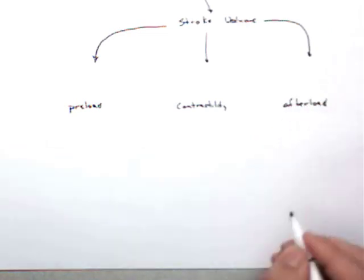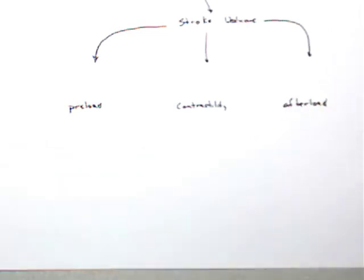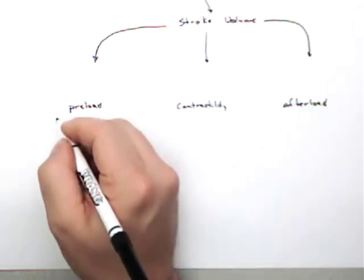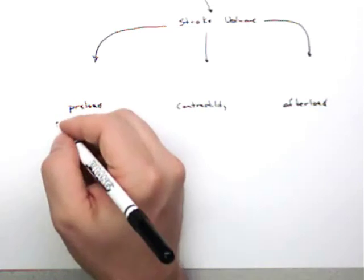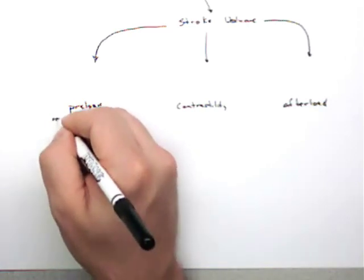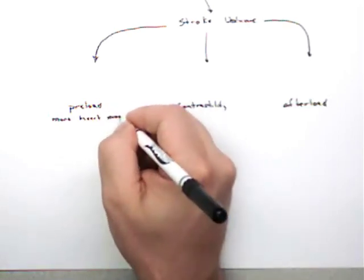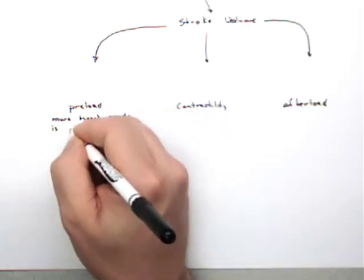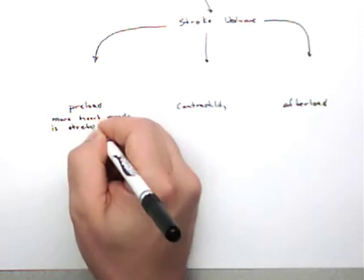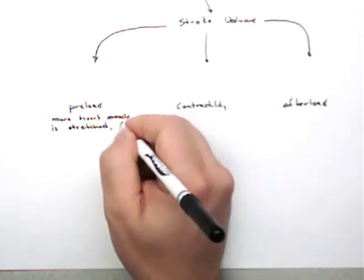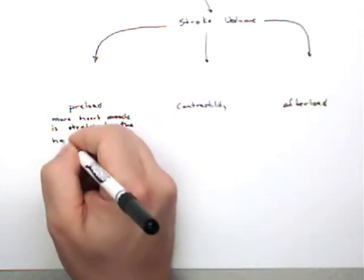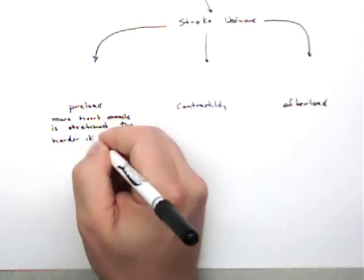Let's go back and define those. Preload is a quality of heart muscle that's very, very special to heart muscle in that—let's just put it this way—the more heart muscle is stretched prior to contraction, the harder it contracts.